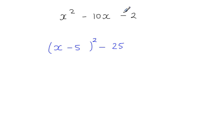And that minus 2, we haven't done anything with that, let's just write that here. And then final step, simplify the constants minus 25 minus 2, minus 27. So we've completed the square.